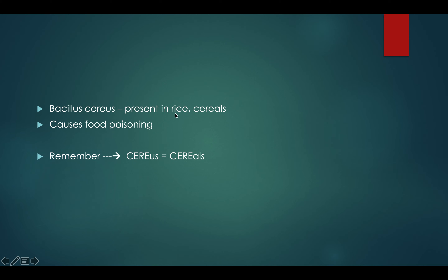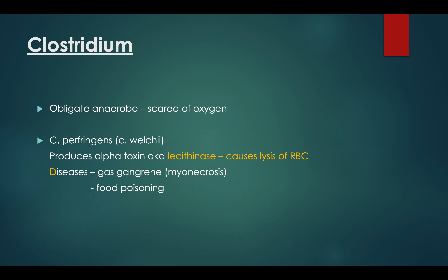There's another less important one — Bacillus cereus. It's present in rice and cereals and causes food poisoning. If you eat rice infected with Bacillus cereus, it'll cause food poisoning. To remember it: C-E-R-E of cereus and C-E-R-E of cereals. Then we have Clostridium, which is an obligate anaerobe.